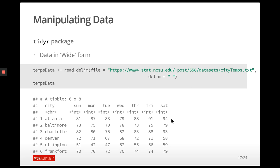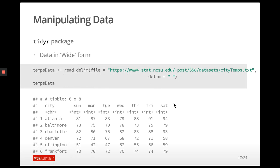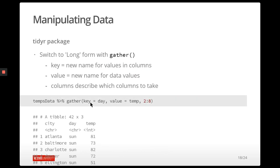This is what that data set looks like — it is in wide format. We want to create a single row for every observation: a row for Atlanta on Sunday (that's 81), Atlanta on Monday (that's 87), Atlanta on Tuesday (that's 83), and so on. We can do this using the gather function. Gather requires three things: the columns we want to turn from wide to long format — here columns two through eight.